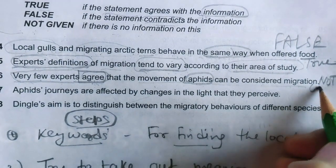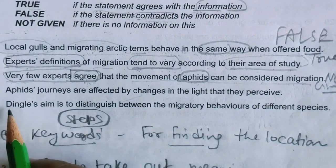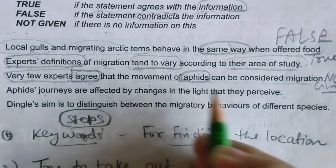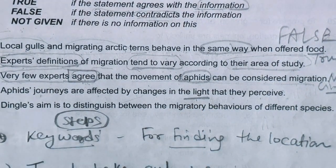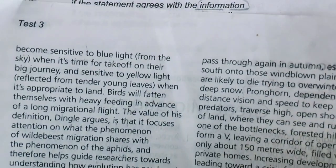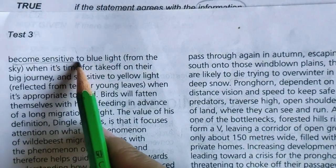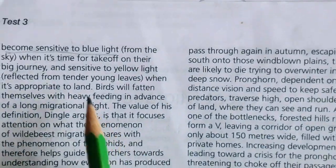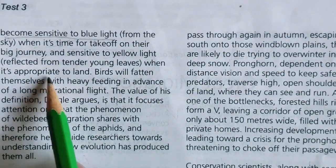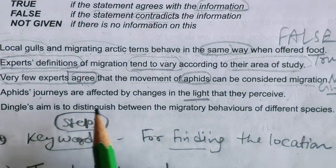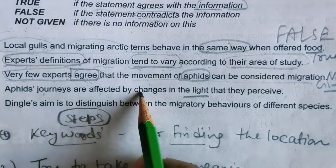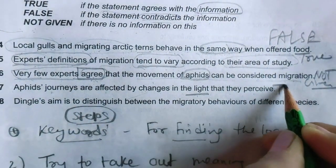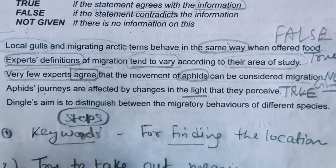Question 16: 'Aphids' journeys are affected by changes in the light that they perceive.' In the passage: aphids 'become sensitive to blue light when it's time for takeoff on their big journey, and sensitive to yellow light when it's appropriate to land.' This perfectly matches. The answer is TRUE.